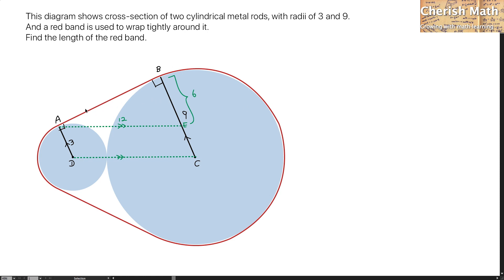And now, by focusing on the triangle ABE, I can find the length of AB by using Pythagorean Theorem. And that is going to be 12 squared minus 6 squared and square root of the whole thing is going to get me 6 times the square root of 3.